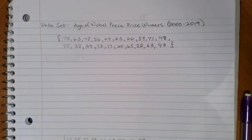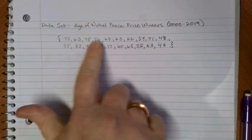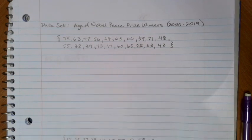For our data set here, what I want to use is these 20 numbers that are listed out. These are the ages of Nobel Peace Prize winners from the year 2000 every year up until the year 2019.